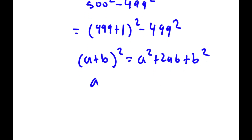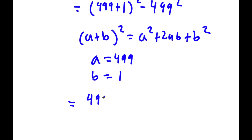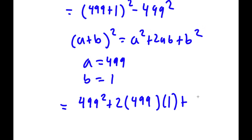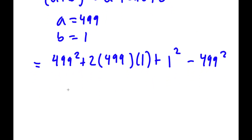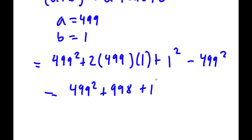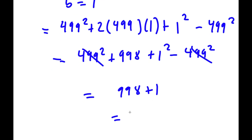So a is 499 and b is 1. I have 499 squared plus 2 times 499 times 1 plus 1 squared, minus 499 squared. This equals 499 squared plus 998 plus 1 minus 499 squared. The 499 squared terms cancel out, leaving 998 plus 1, which equals 999.